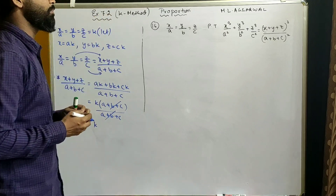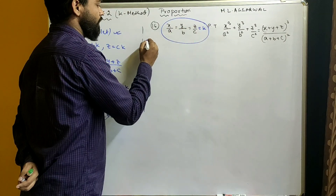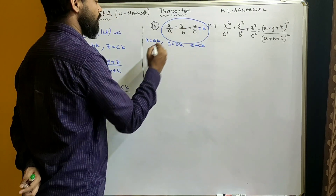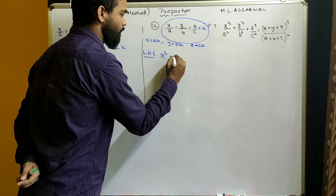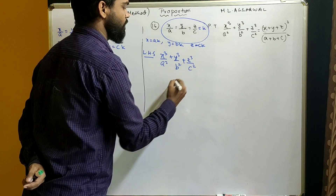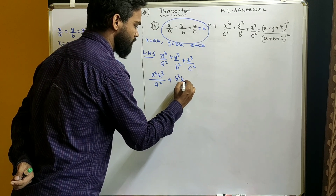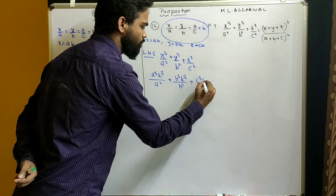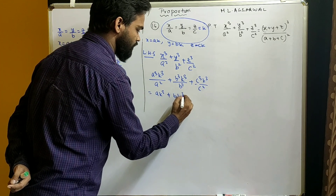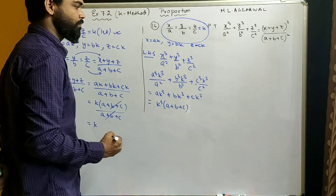Now let's look at sum number 16 from Xi 7.2 from Amalgawal. We'll use the K-method, taking the common ratio as k, so x = ak, y = bk, z = ck. Taking the LHS, which is x³/a² + y³/b² + z³/c², we substitute: x³ becomes a³k³/a², y³ becomes b³k³/b², z³ becomes c³k³/c². After cancellation, this becomes ak³ + bk³ + ck³. Taking k³ common, this gives k³(a + b + c).